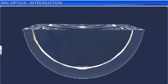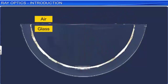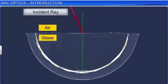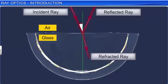Let us observe the path of light when it falls on an interface of two transparent media. When a beam of light is incident on an interface separating two transparent media, it is partly transmitted through the second medium and partly reflected into the same medium. The light ray that falls on the interface is called the incident ray, the transmitted ray is called the refracted ray, and the ray that bounces back is called the reflected ray. The angle between the incident ray and the normal is the angle of incidence i, the angle between the reflected ray and the normal is the angle of reflection θ, and the angle between the refracted ray and the normal is the angle of refraction.